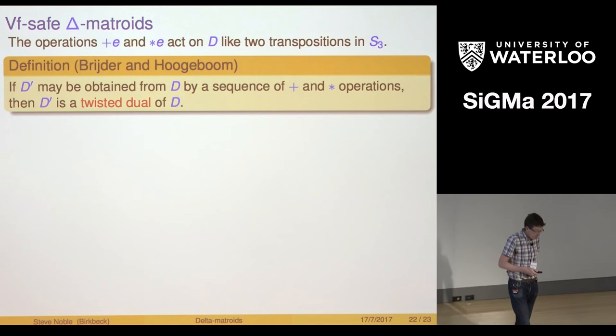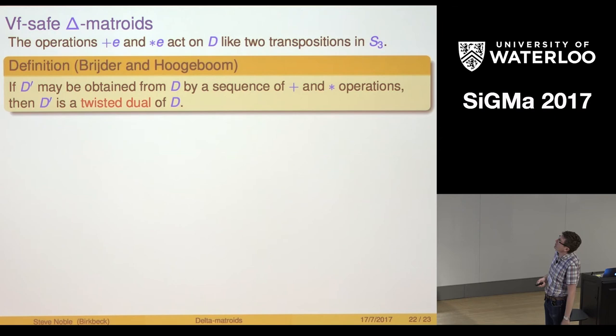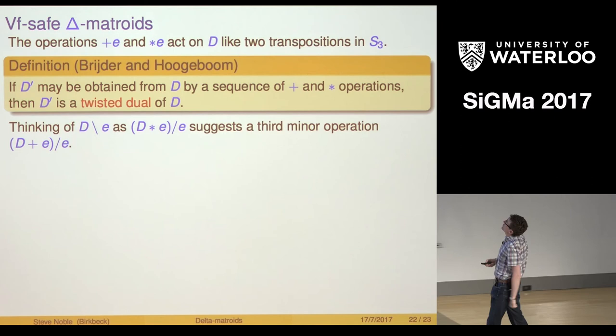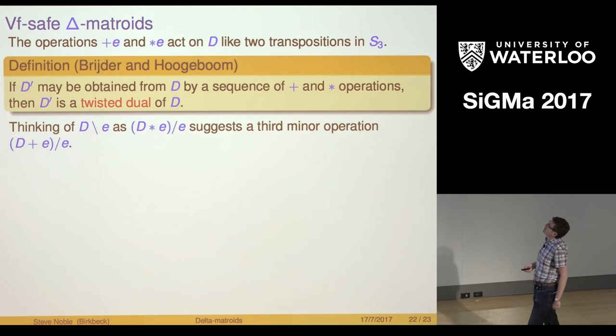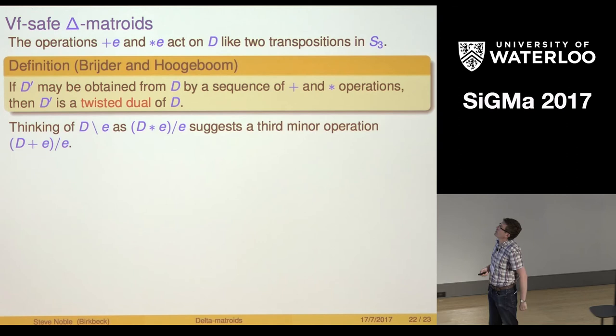What we'll say is if I can get from D to D dashed by doing an arbitrary sequence of these things with potentially many different edges, then I'll say one is a twisted dual of the other. The second thing is if I think of the deletion, you can easily check that the deletion is the same as doing a partial dual and then contracting. This suggests that maybe we could come up with a third minor operation when it may not always be defined, where I do the loop complementation and then I contract.